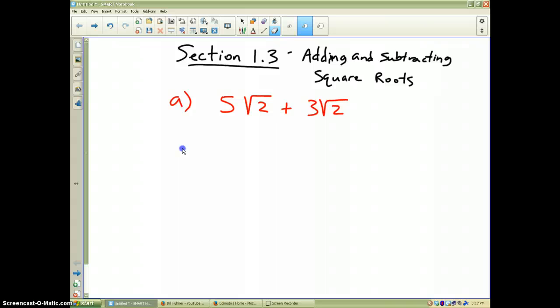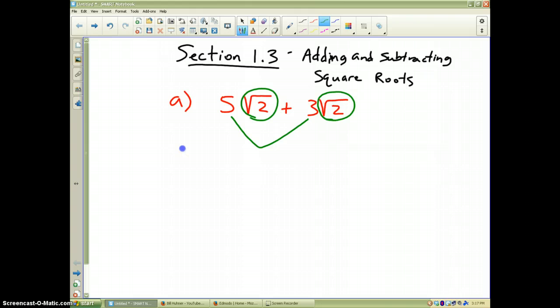Adding and subtracting square roots work the exact same way. As long as the number underneath the square root sign is exactly the same, all you have to do is add the two numbers out front. So 5 plus 3 is 8 times the square root of 2 would be your final answer for this particular problem.